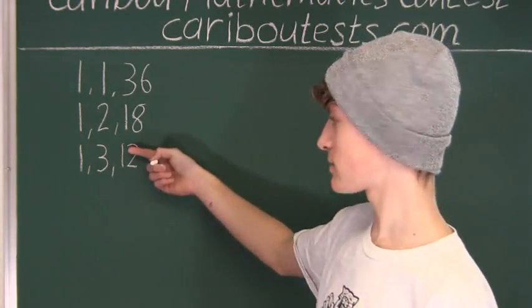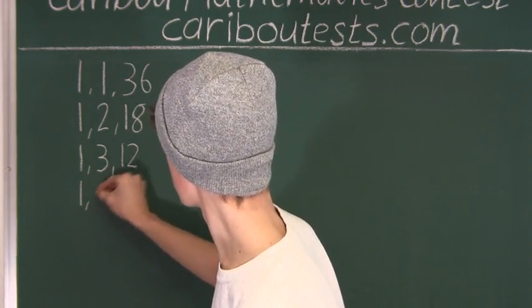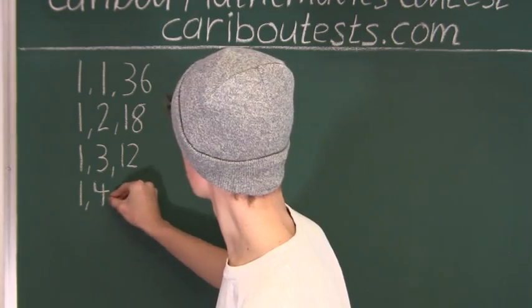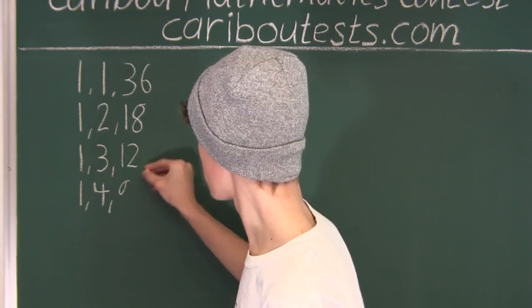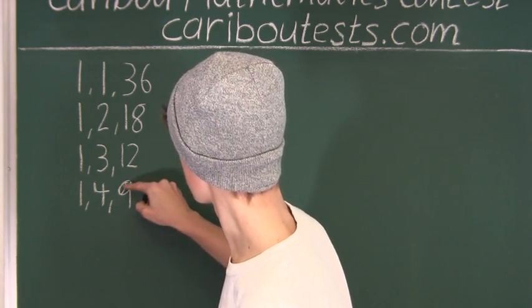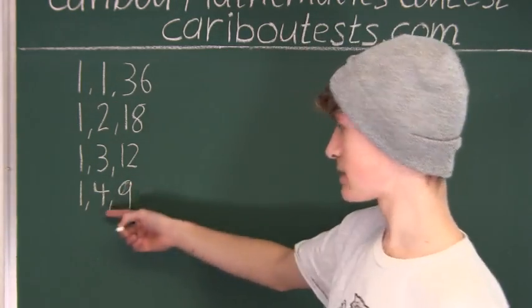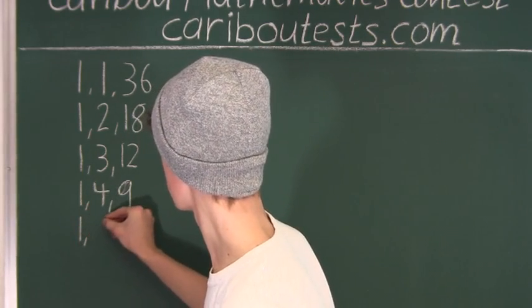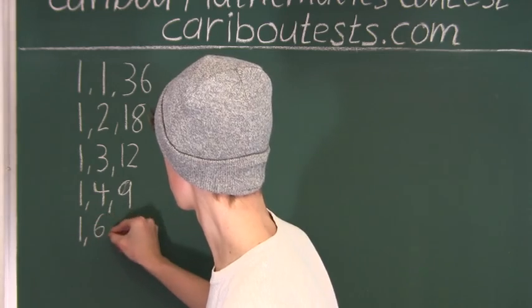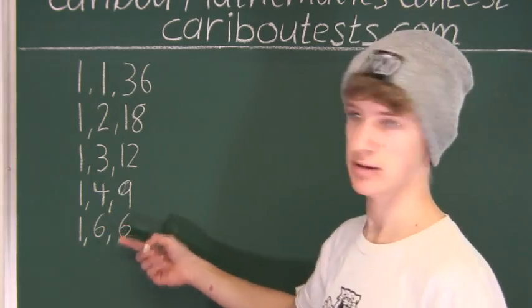The next biggest factor of 36 is 4. 36 divided by 4 is 9. And then the next biggest factor of 36 is 6. We can still write 1. And then 36 divided by 6 is 6.